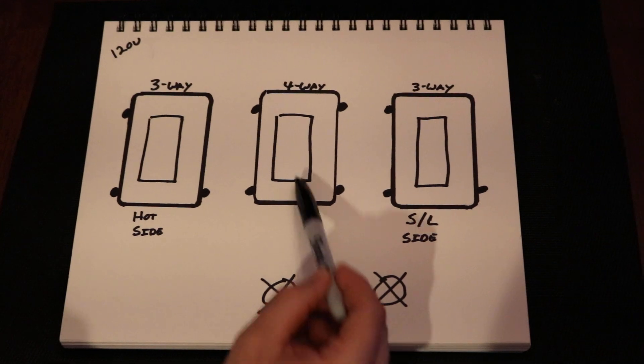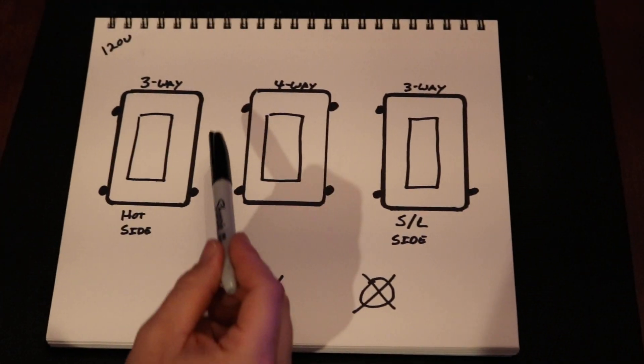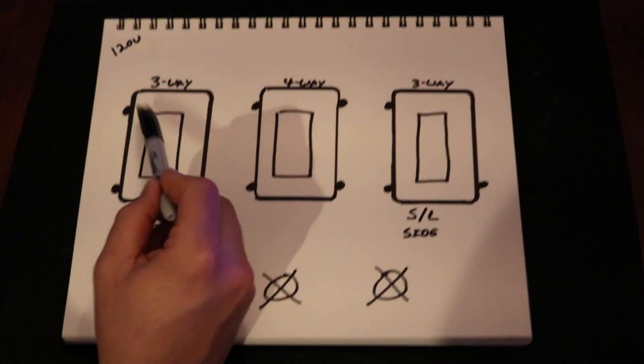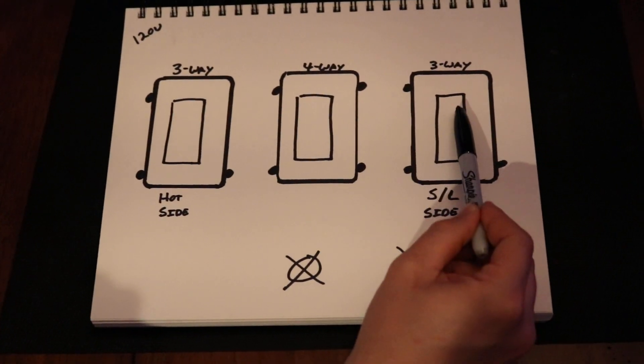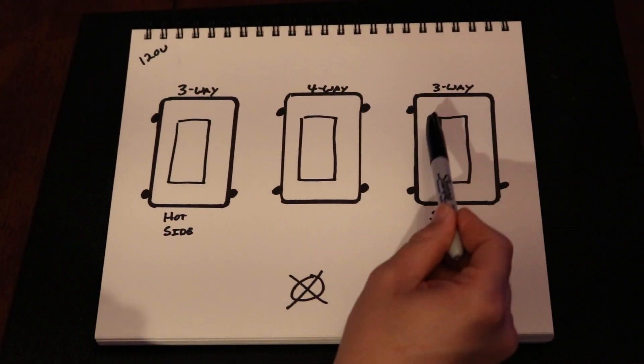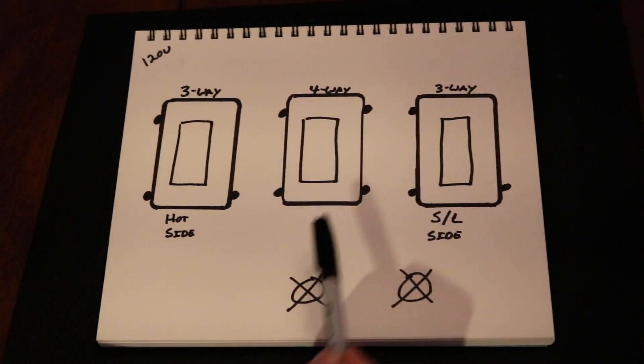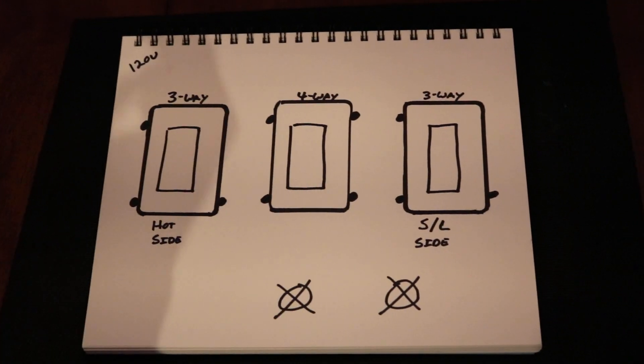Four-ways are the switches that are in the middle. You can have as many four-way switches as you'd like. You could have a three-way, a four-way, a four-way, and then a three-way, or you could have ten four-ways if that's what you wanted. But you'll always have two three-ways in any system where you're controlling lights from multiple locations.